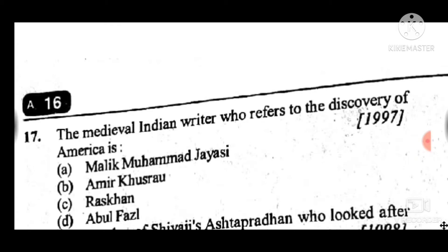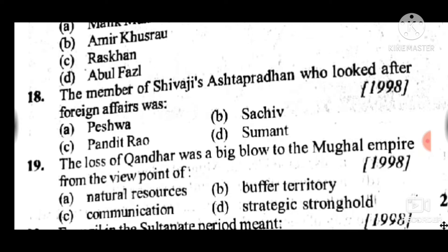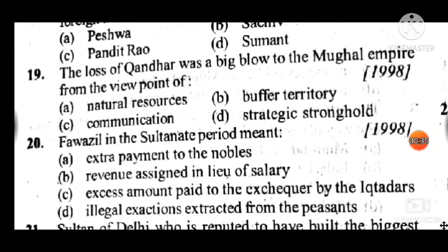Question 17: The medieval Indian writer who refers to the discovery of America is — answer to question 17 is D: Abul Fazl. Question 18: The member of Shivaji's Ashta Pradhan who looked after foreign affairs was — answer to question 18 is D: Sumant. Question 19: The loss of Kandhar was a big blow to the Mughal Emperor from the viewpoint of — answer to question 19 is D: strategic stronghold.